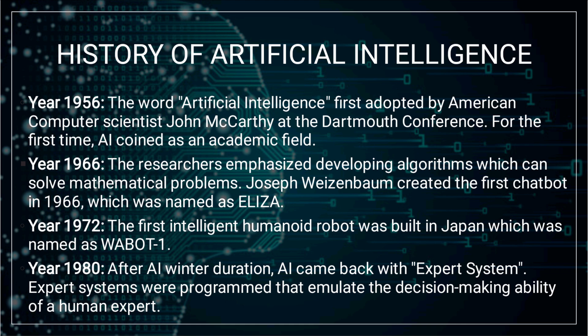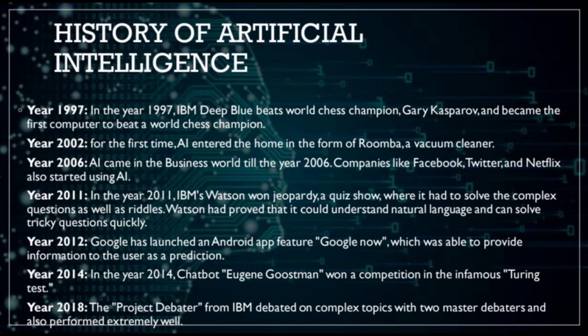In the year 1972, the first intelligent humanoid robot was built in Japan, named WABOT-1. In the year 1980, after the AI winter, AI came back with Expert Systems. Expert Systems were programmed to emulate the decision-making ability of a human expert. In the year 1997, IBM Deep Blue beat world chess champion Garry Kasparov, becoming the first computer to beat a world chess champion.